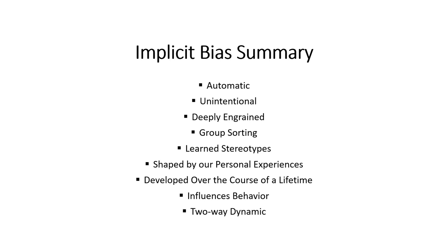Many of us have encountered that — we have to prove to others that I'm not what you think I am, because we recognize that others have biases towards us and we're trying to counteract that. So again, implicit bias summary: they're automatic, unintentional, deeply ingrained, involve group sorting and learned stereotypes, are shaped by our experiences developed over a lifetime, influence our behaviors, and involve a two-way dynamic.